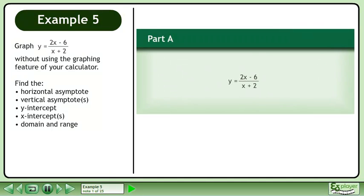Graph y equals 2x minus 6 over x plus 2 without using the graphing feature of your calculator. To graph this, we will find the horizontal asymptote, vertical asymptotes, the y-intercept, x-intercepts, and the domain and range.